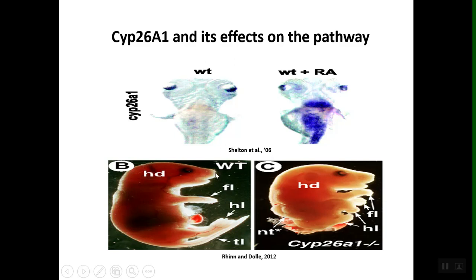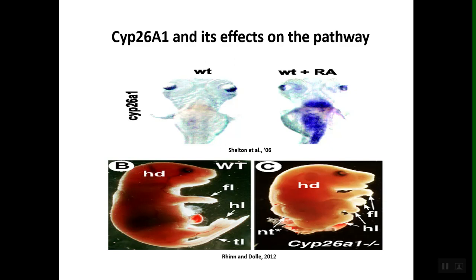What does CYP26A1 do? In this figure at the bottom, in a situation where CYP26A1 is present, we have normal development — retinoic acid is also present. In the situation where we knock out CYP26A1, we see abnormal development. CYP26A1 is stimulated and activated by retinoic acid, and it is actually responsible for degrading retinoic acid. Without CYP26A1, there is no degradation and too much retinoic acid accumulates, causing abnormal development.